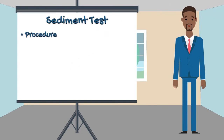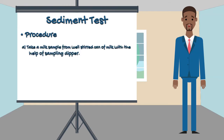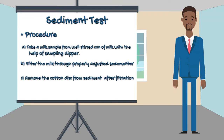Procedure for the Sediment Test: Take a milk sample from a well-stirred can of milk with the help of a sampling dipper, filter the milk through a properly adjusted sedimenter, remove the cotton disk from the sedimenter after filtration, and compare the used cotton disk with the standard disk.